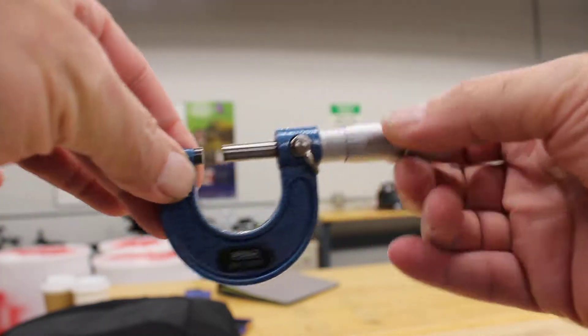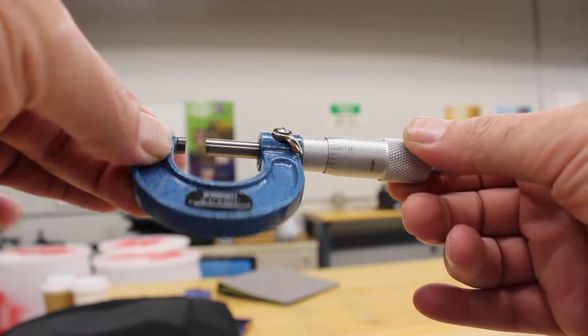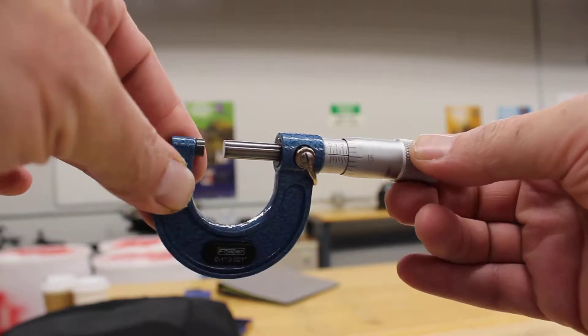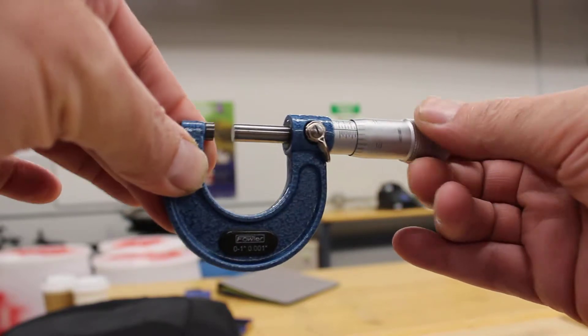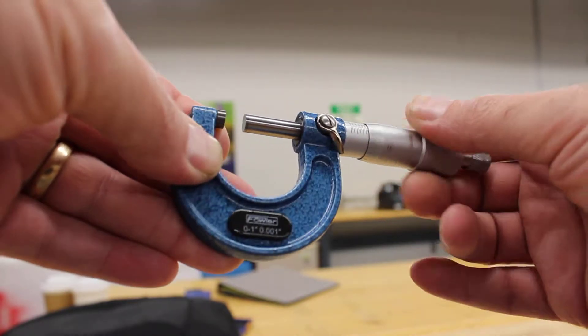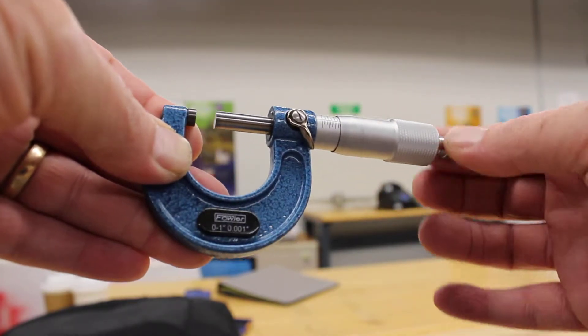Now I'm going to talk about how to handle micrometers. Like other instruments such as dial calipers, they're pretty sensitive. You don't want to drop them; you want to make sure you carefully handle these things.